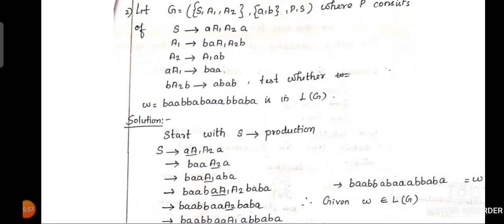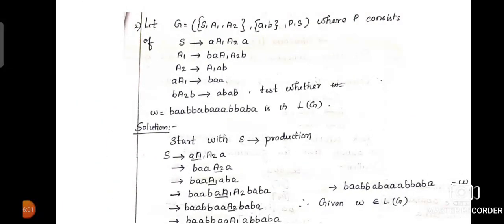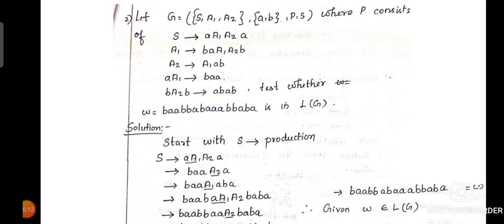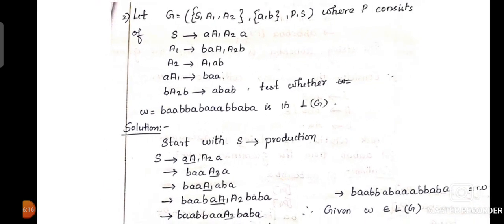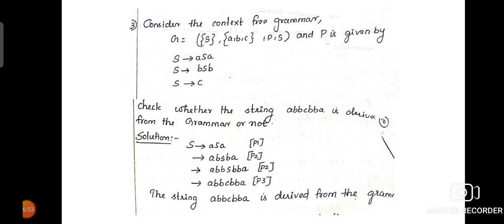When we perform the derivations, we start with the starting symbol. Then, based upon the sequence of input symbols in the string, we apply the appropriate productions. For example, in the first step, our right-hand side will have A1, A2. In the next step, we apply A tends to A1 and substitute accordingly. We substitute the right-hand side of the production rule for the non-terminal. We continue performing substitutions, and finally, if we are able to produce the string, we can tell the conclusion — that the particular string belongs to the language of the grammar.